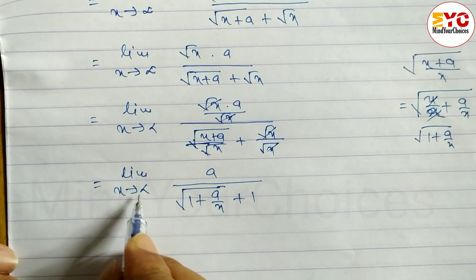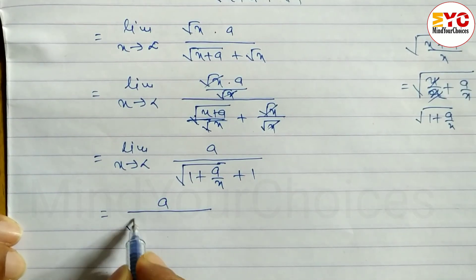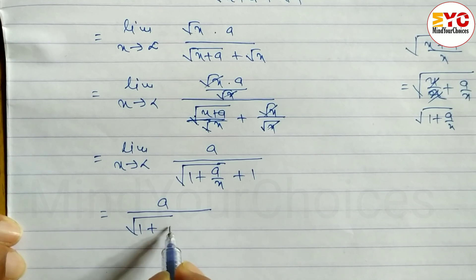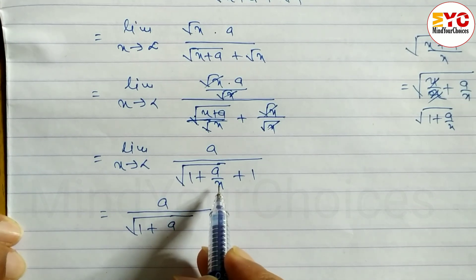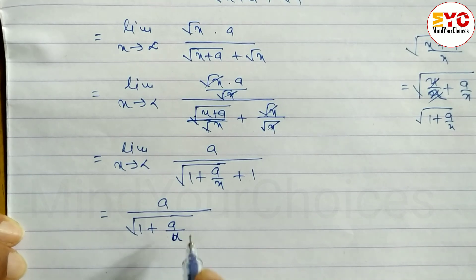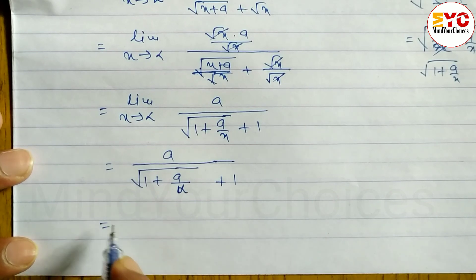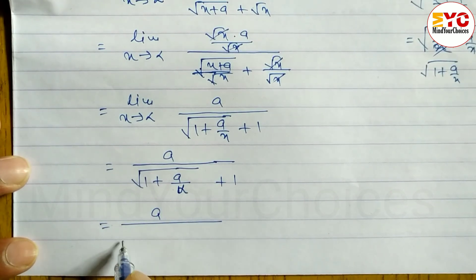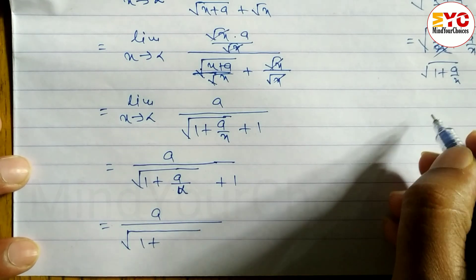Now substituting x → infinite: a/x becomes a/infinite which equals 0. So we get a divided by √(1 + 0) plus 1, which is a divided by √1 plus 1.